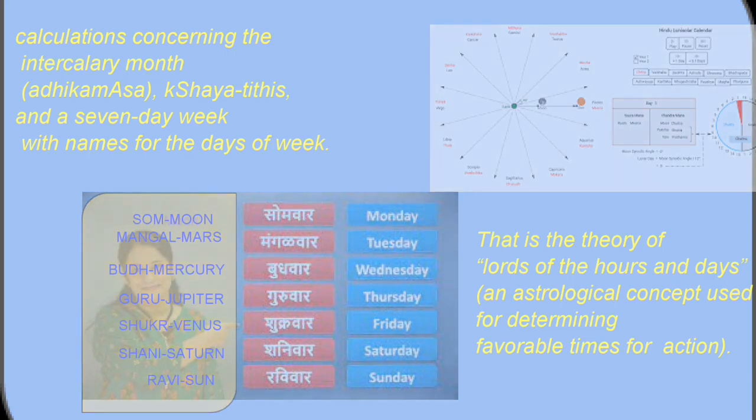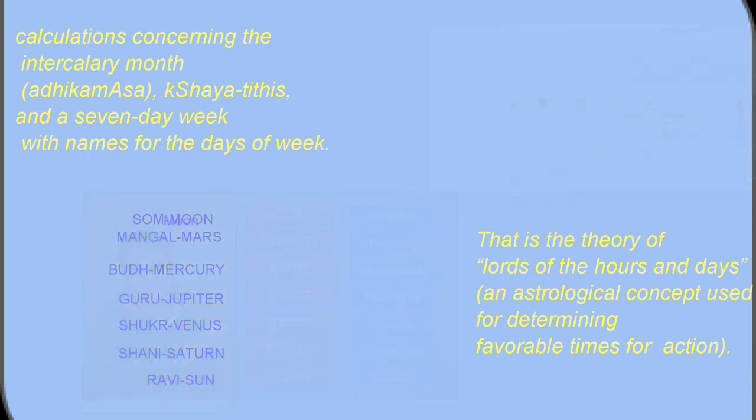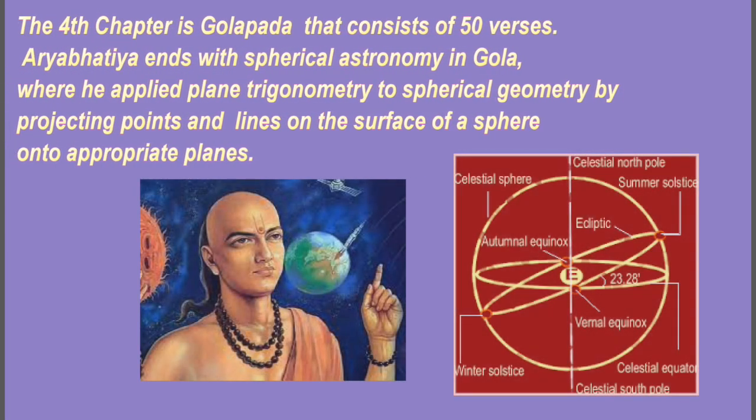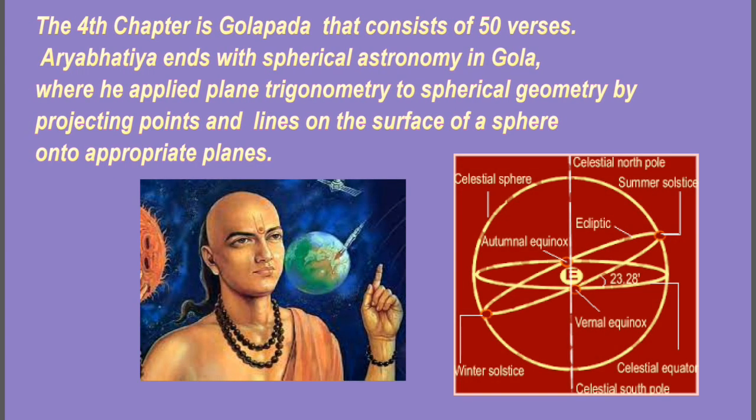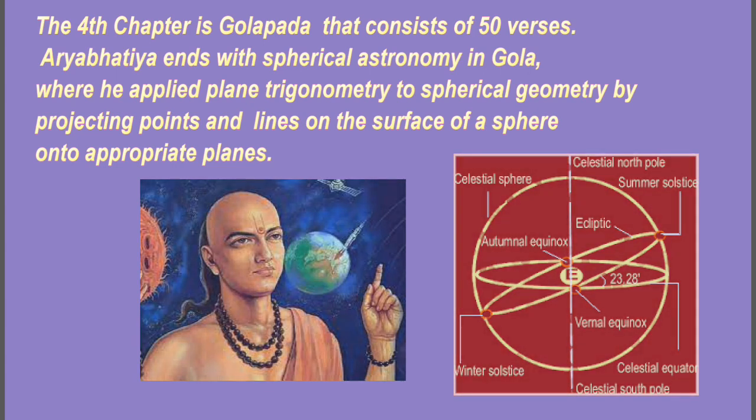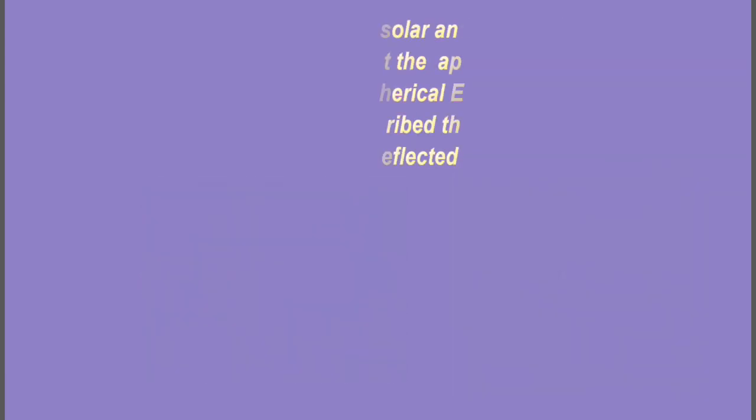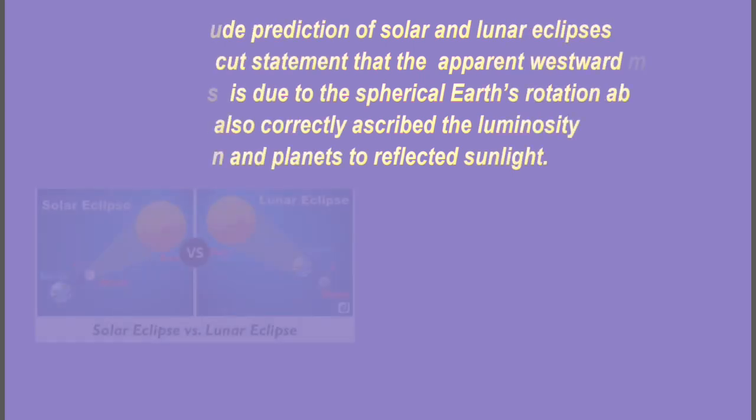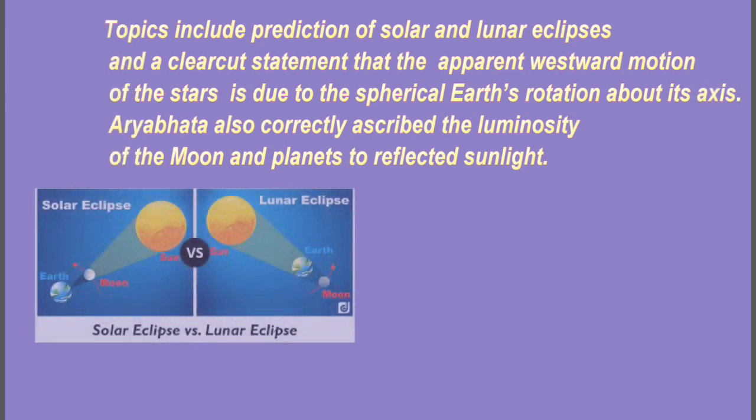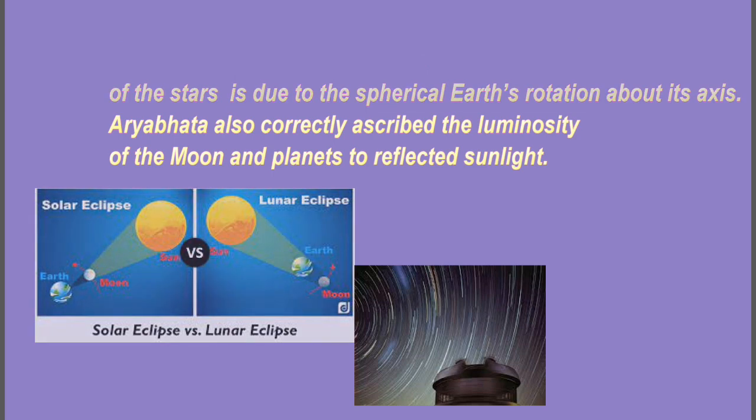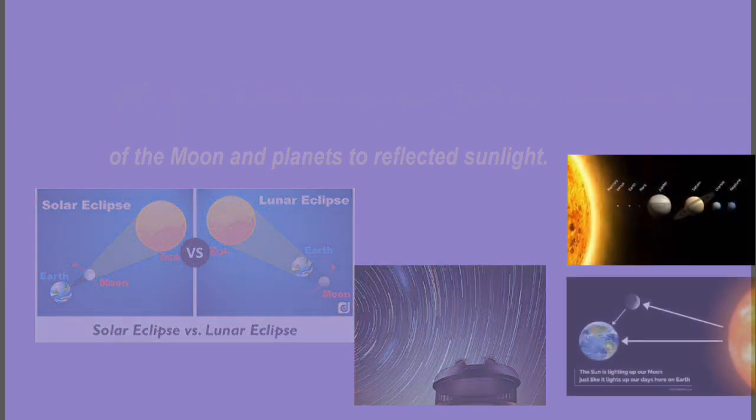The fourth chapter is Gola path that consists of 50 verses. Aryabhattiya ends with spherical astronomy in Gola, where he applied plane trigonometry to spherical geometry by projecting points and lines on the surface of a sphere onto appropriate planes. The topics include prediction of solar and lunar eclipses, and a clerical statement that apparent westward motion of the stars is due to the spherical Earth's rotation about its axis. Aryabhattiya also correctly ascribed the luminosity of the moon and the planets to reflected sunlight.